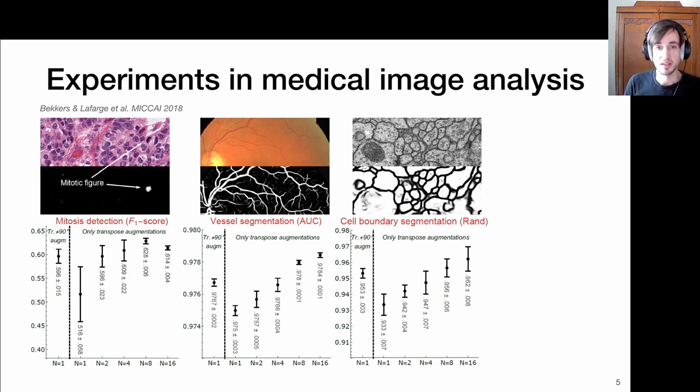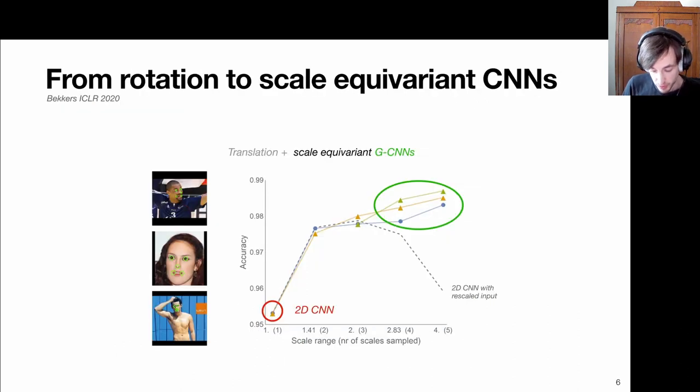Since then, we've been applying this to different types of applications, starting off in the 2D medical image analysis domain - vessel segmentation or other types of segmentation tasks. We see the same behavior that if we increase the resolution along the rotation axis, we turn on the group equivalence aspect of things, then we start to quite significantly outperform methods like 2D conventional methods that are based on data augmentation.